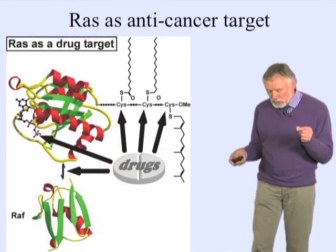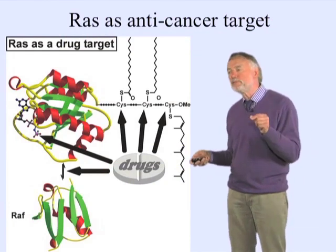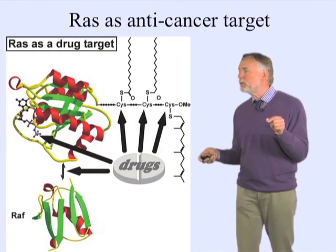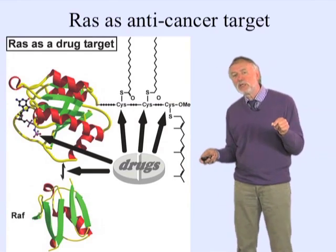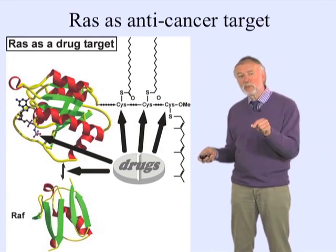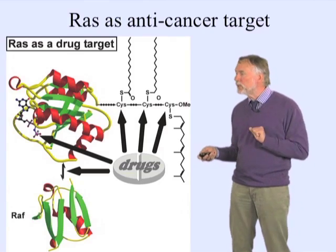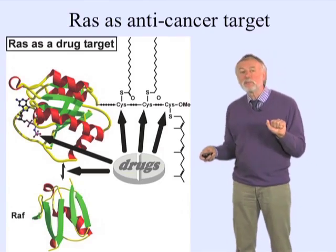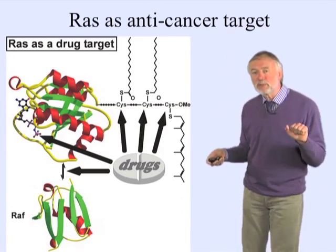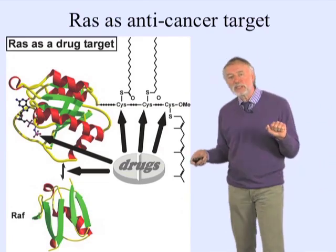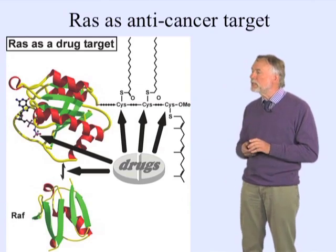RAS is the most frequent oncogene — about 25% of people who come to the clinic and are diagnosed with a tumor have a RAS mutation, one of the ones described. These are at least the most frequent ones. Every drug company is also working on trying to inhibit the RAS pathway and RAS signaling as a way of treating RAS-mediated cancers.